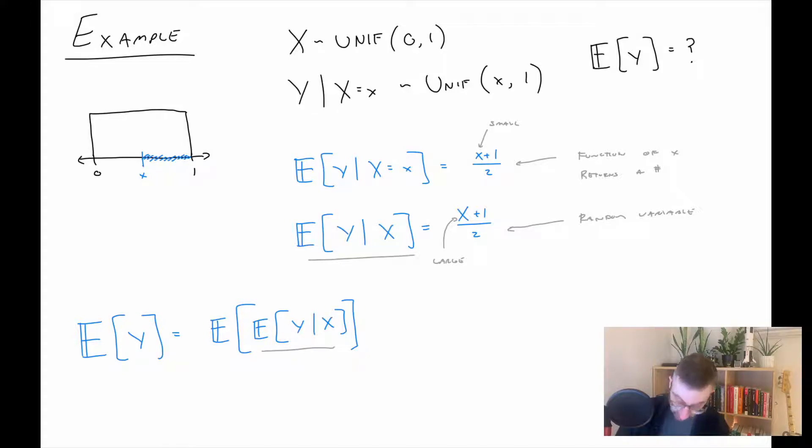So this is now the expected value of (X + 1)/2, and it's important that X is random. Otherwise when we took this expectation nothing would happen. And then just using various expectation rules that we've learned previously, we get something like this. Works out to be—I think the expected value of X is 0.5, that shouldn't be too hard to see—plus one over two is 0.75. So yeah, hopefully that helps a little bit with the intuition behind what's happening here.